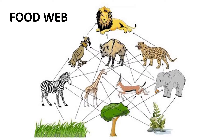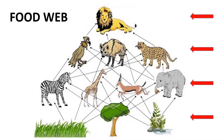Many food chains can link together to form food webs. This happens because most plants and animals are part of several chains. Each level in a food web is called a trophic level.